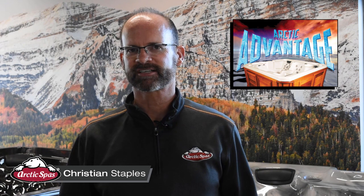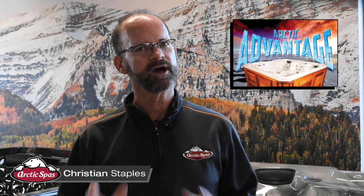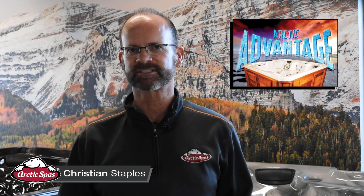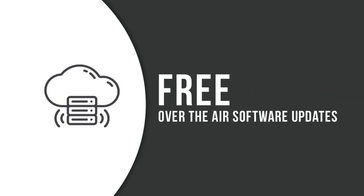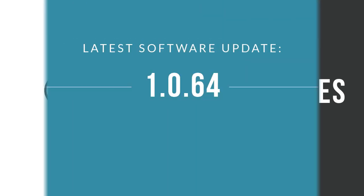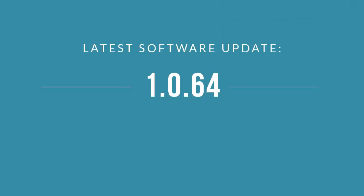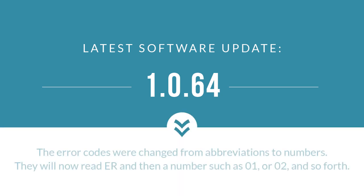I'm Christian Staples with Arctic Spas. One huge advantage Arctic Spa owners have over other brand owners are the free over-the-air software updates. Just like your computer or phone, the software gets better and better as time goes on, giving you more features. With the latest software update of 1.0.64, the error codes were changed from abbreviations to numbers. They will now read ER and then the number, such as 01 or 02 and so forth.